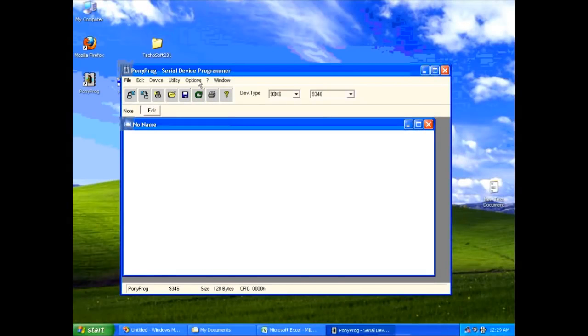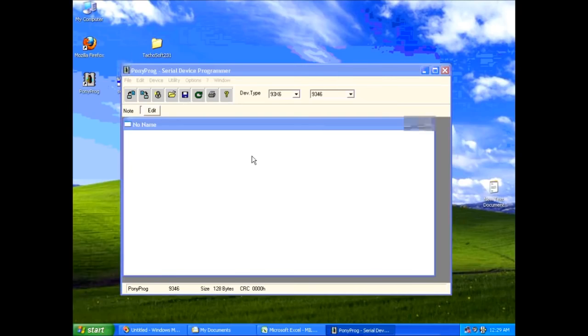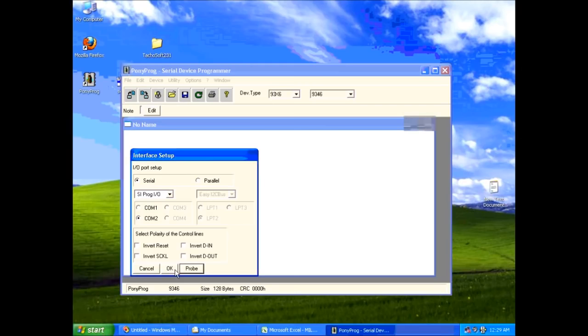I'm using Ponyprog which is a serial device programmer. It's a freeware that we can use to read information from the serial port. The first thing I'm going to do is set up the interface. Make sure it's selected to serial port. SIPROGIO. Select the serial port that I'm connected to. Leave everything else unchecked. We can do a quick probe to make sure everything is okay. And then click OK.